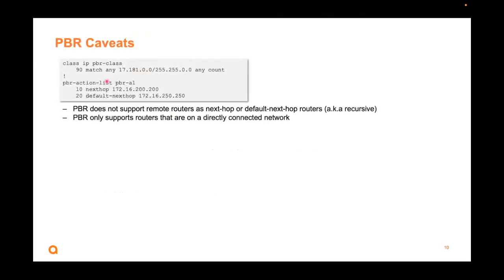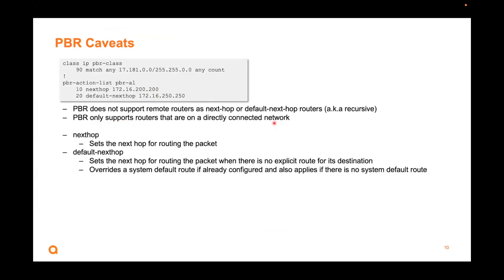Caveats: PBR does not support remote routers as next hops — you cannot do recursive lookup. Your next hop has to be on the directly connected interface, a directly connected network. Regarding next hop versus default next hop: next hop means you're specifying the desired next hop for routing the packet if it matches. Default next hop can be used like a default route to override the system default route if already configured, but it also applies if there's no default route.